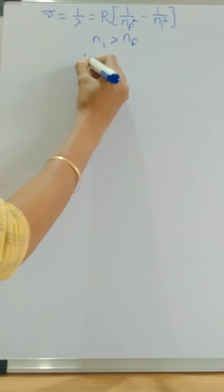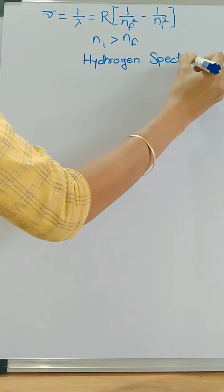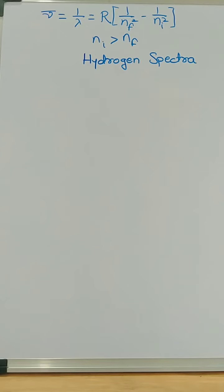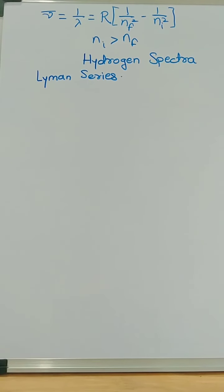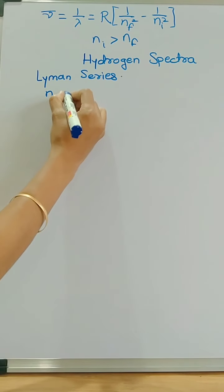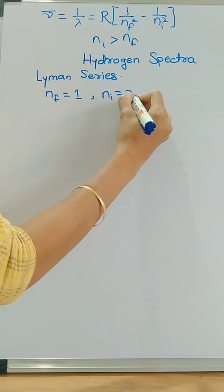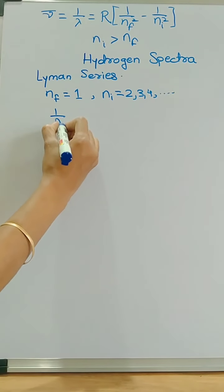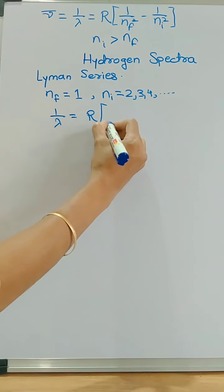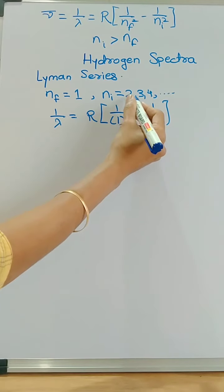Now we talk about the hydrogen spectra. In hydrogen spectra, five different series are obtained. The first series is the Lyman series. For Lyman series, nf is 1 and ni is greater than 1, so it will be 2, 3, 4 and onwards. The equation will be 1/λ = R × (1/1² − 1/ni²), where ni can take values 2, 3, 4 and onwards.